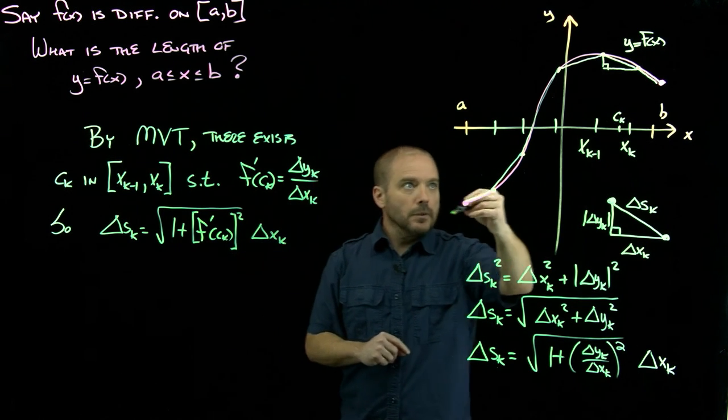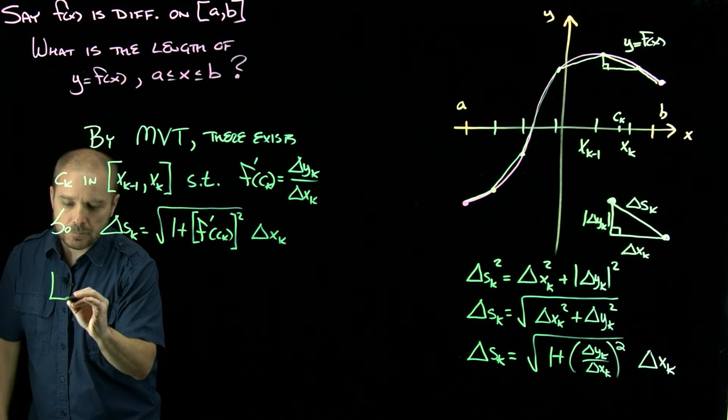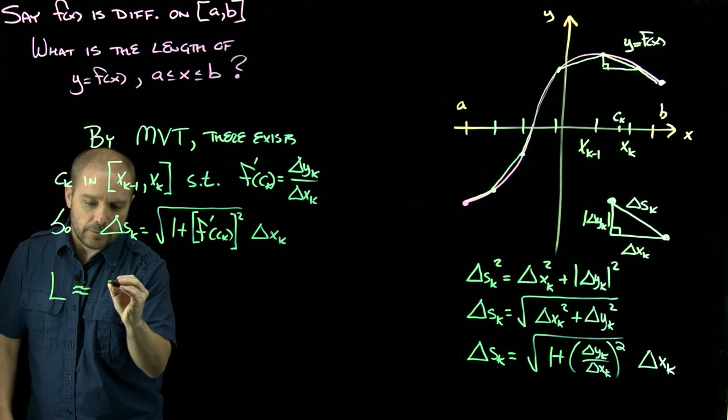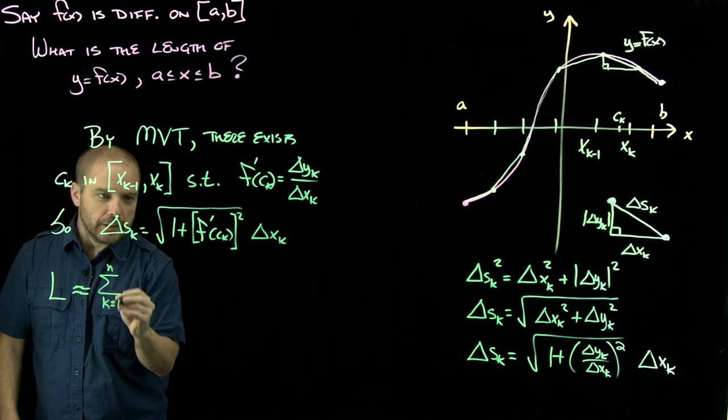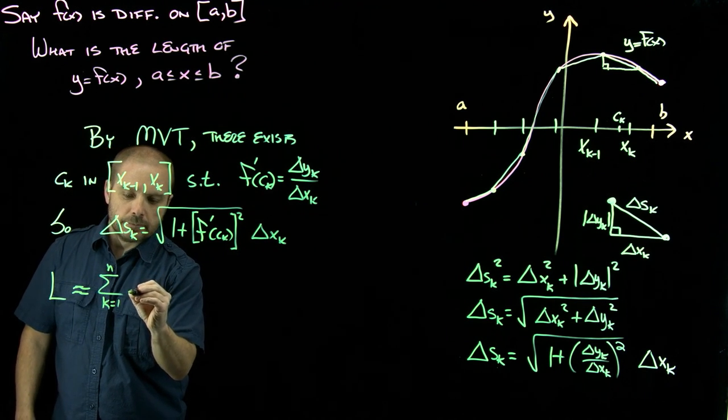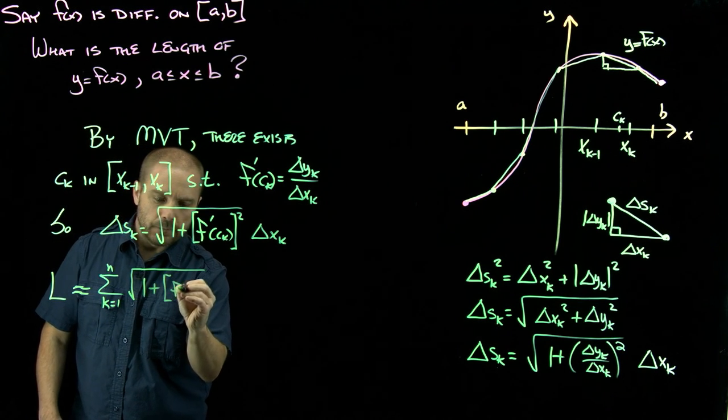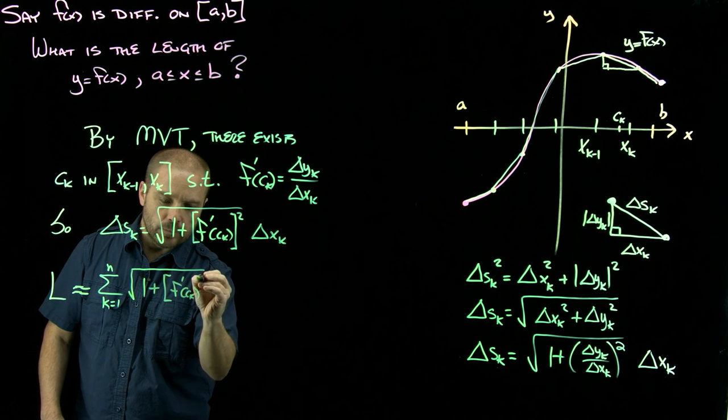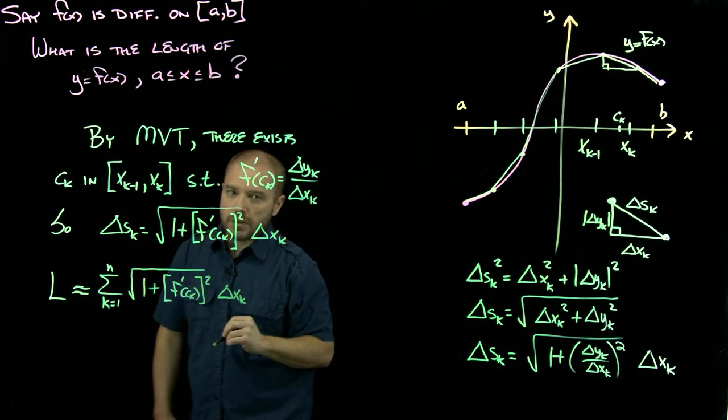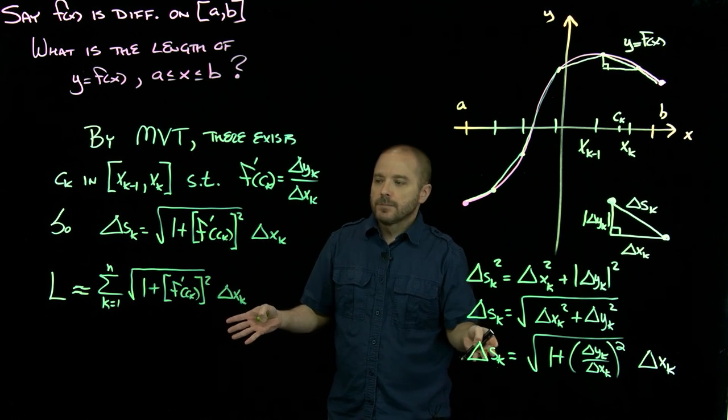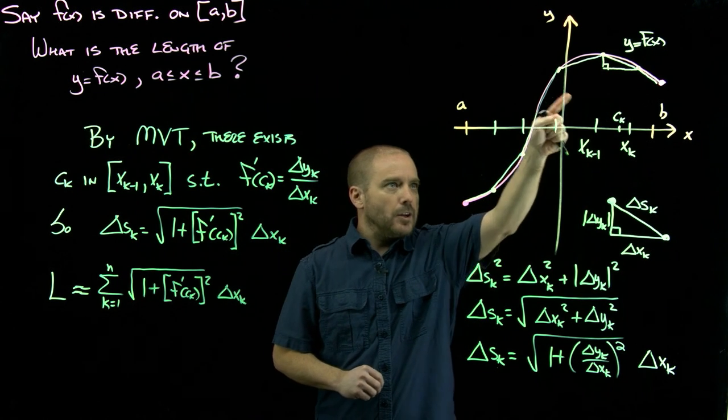The length of this curve would be approximately the sum of all those little line segments, all those little delta s sub k's. As we've done in all of our integration, the next step is to shrink these down so they get better and better at matching the curve.